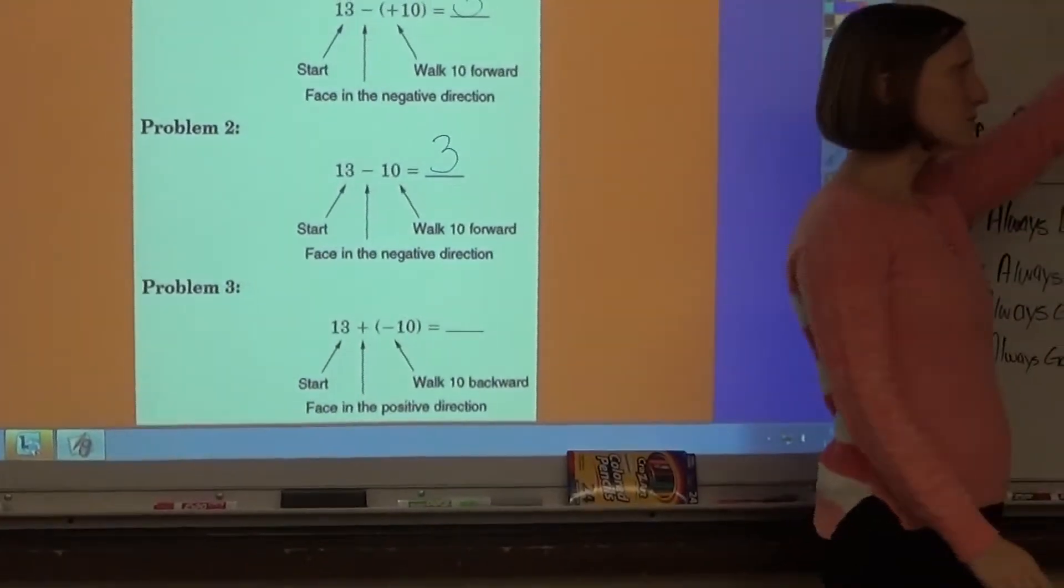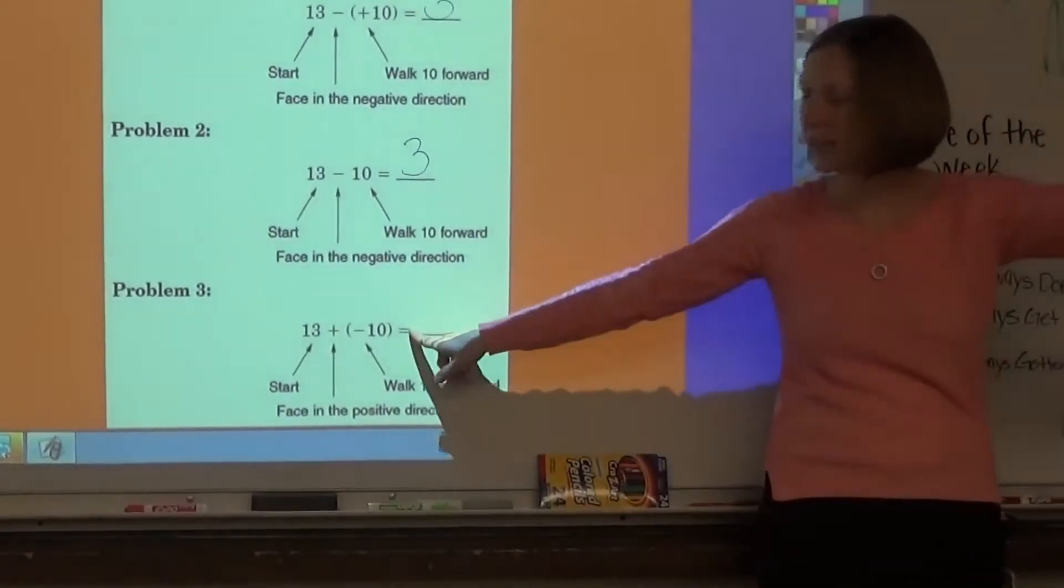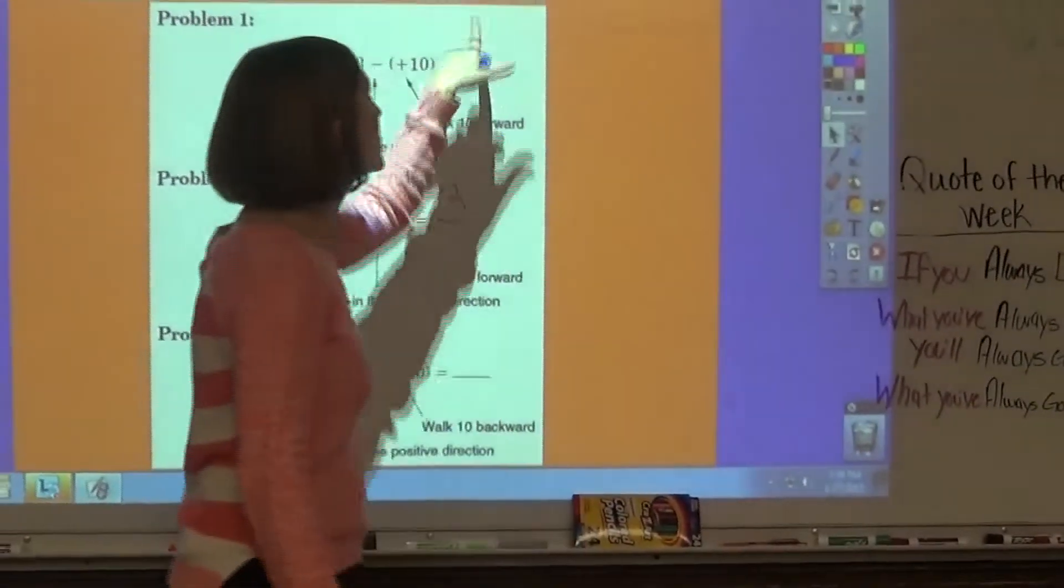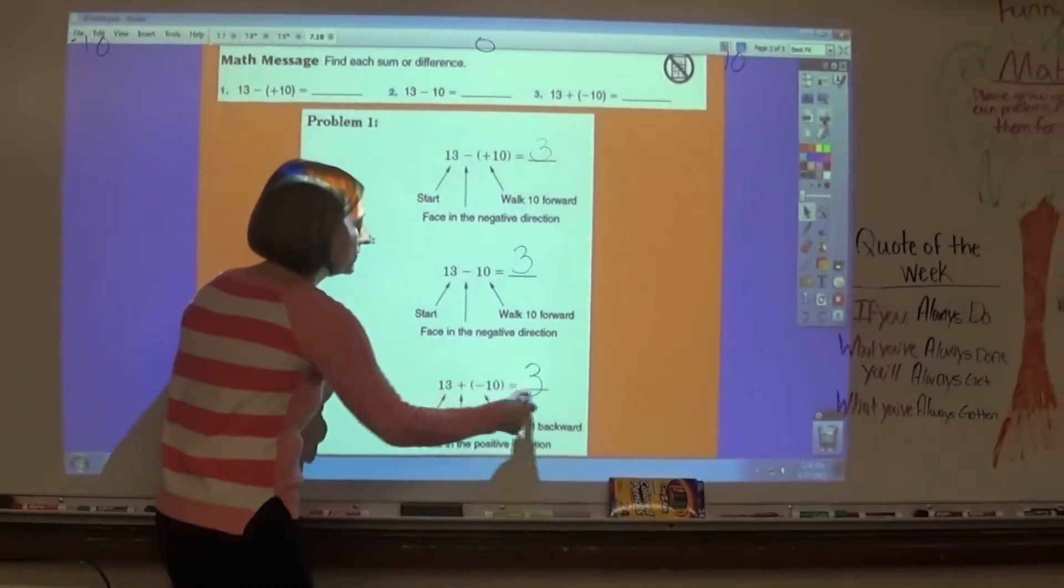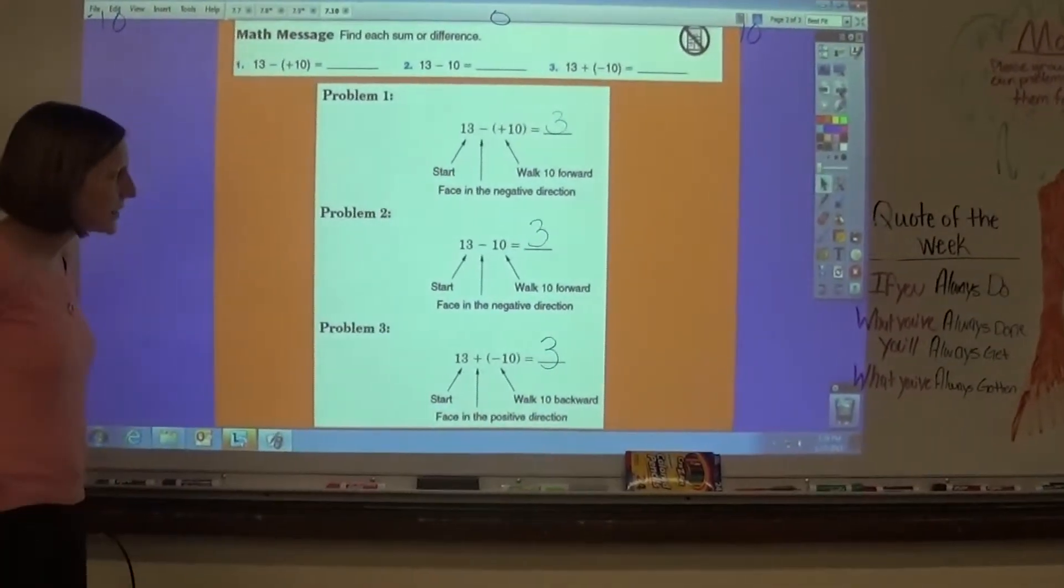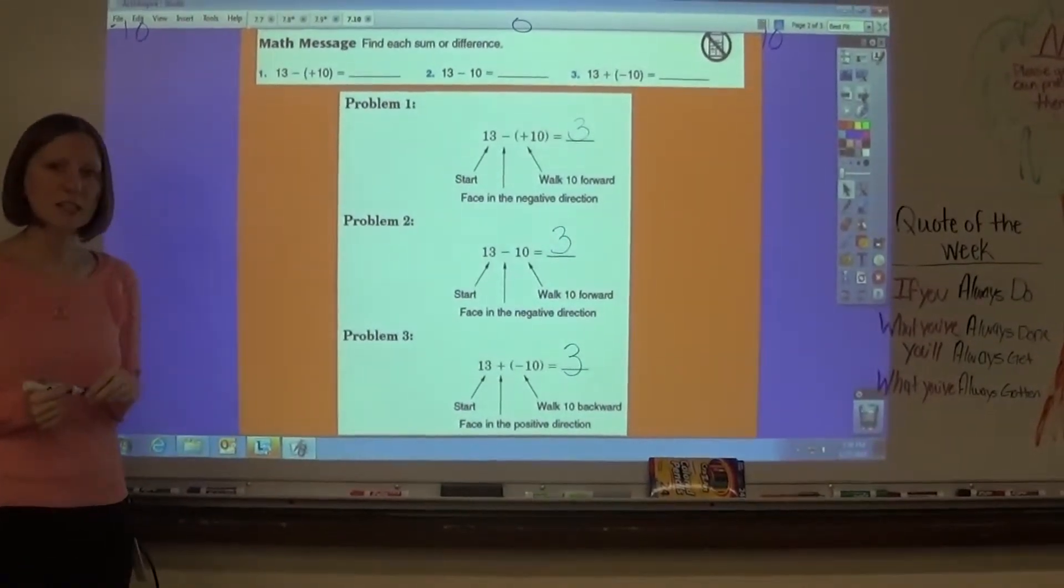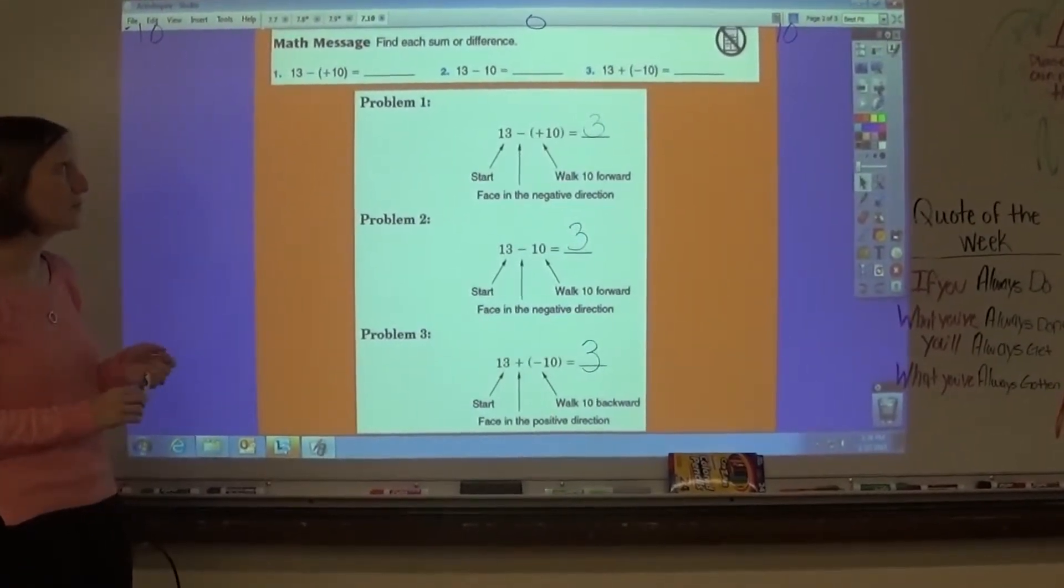So I'm facing the positive direction. But because I'm adding a negative 10, I'm actually going to take 10 steps backwards, which would again land me at positive 3. No matter how you write this problem, there's three different ways that they've written out their number sentences here, I still end up with a positive 3.